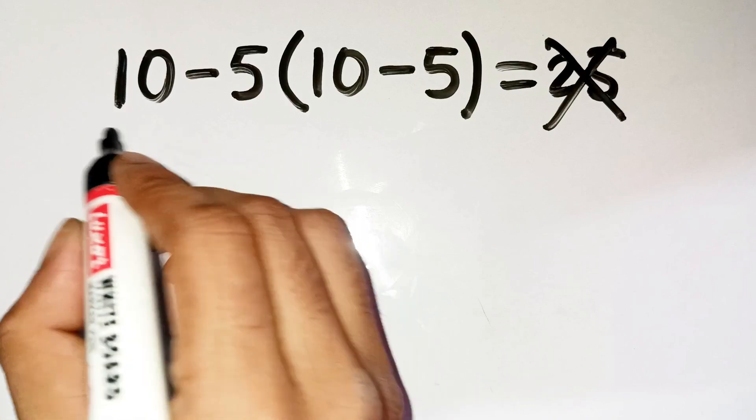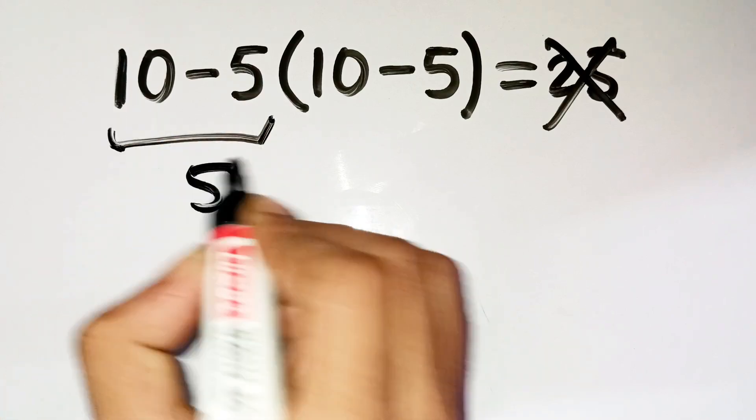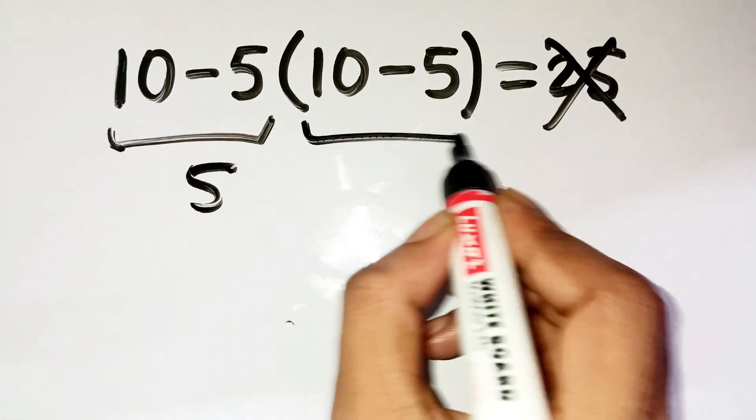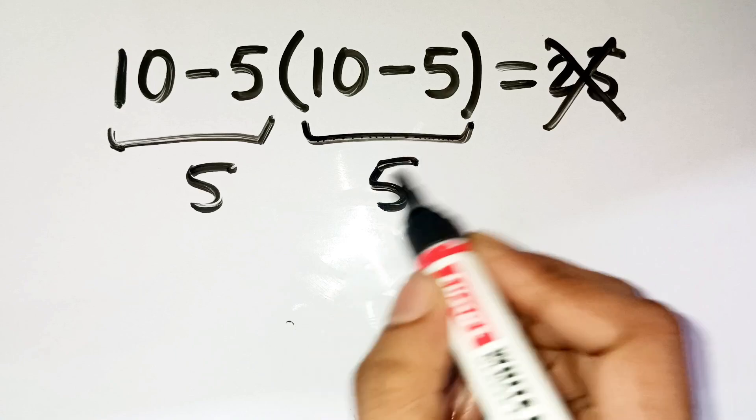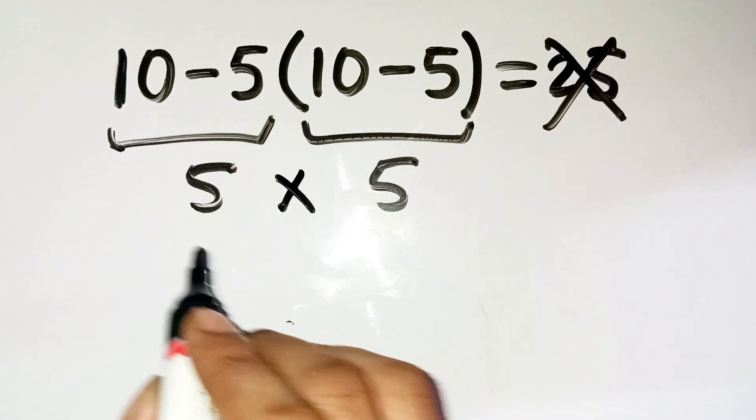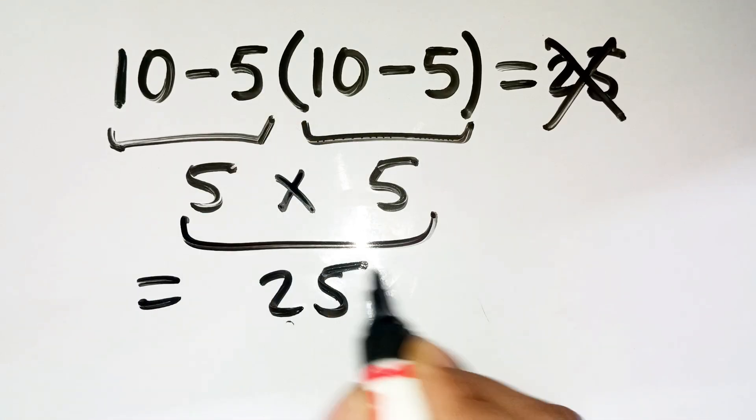And most people confidently go, 10 minus 5 is 5. And inside the parenthesis, 10 minus 5 is also 5. And then they multiply those two 5s together and get 25. Done.